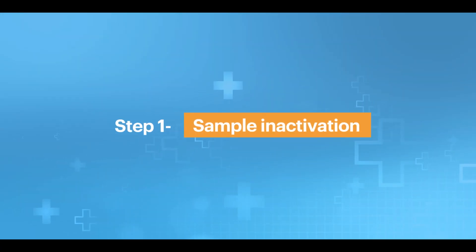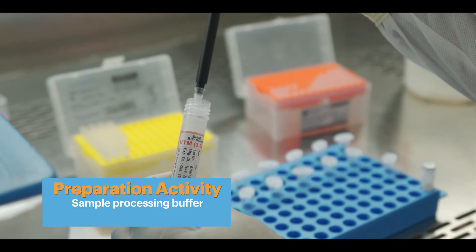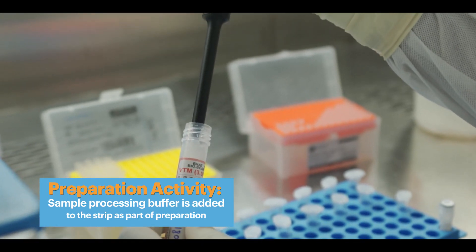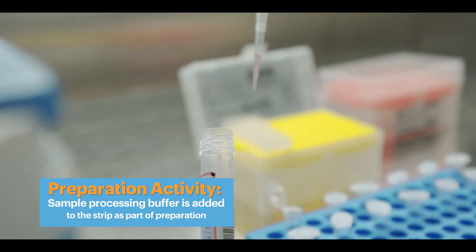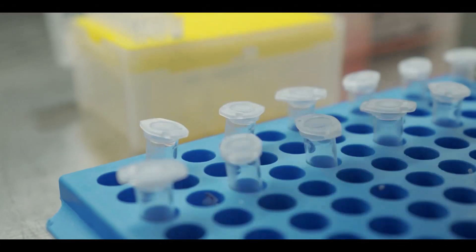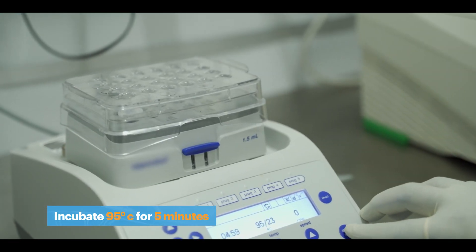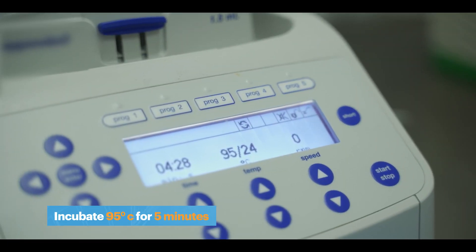Step 1: Sample Inactivation. After registering, the sample is added to the microcentrifuge tube or strip along with sample processing buffer. The tube or strip is incubated at 95 degrees Celsius for 5 minutes in a heat block.